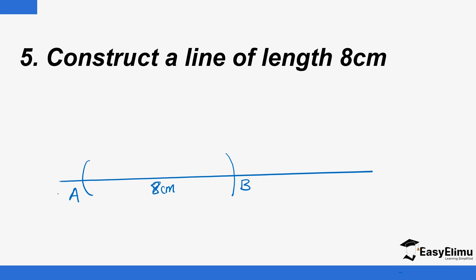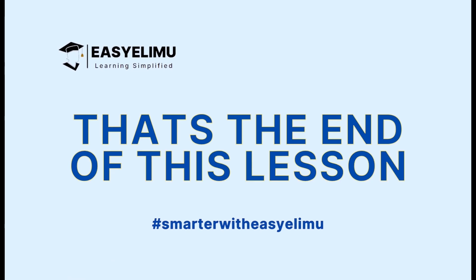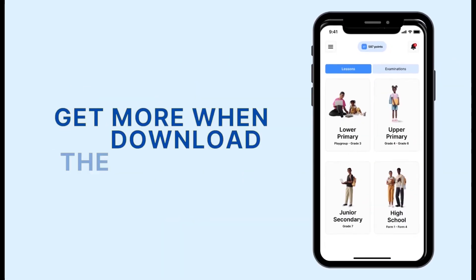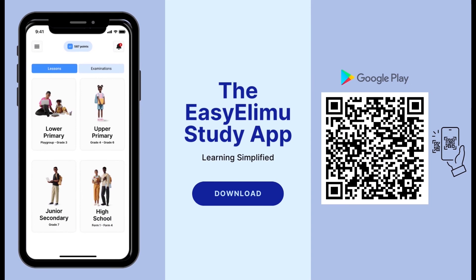That is the simple rule on how to construct a line of given length. We have an assignment: construct a line of length twelve centimetres. Attempt it as soon as possible. That marks the end of the lesson. Until next time, see you soon.